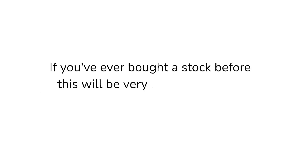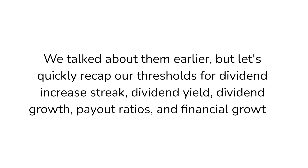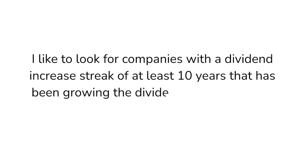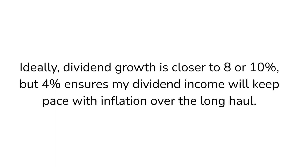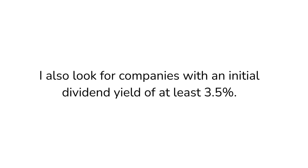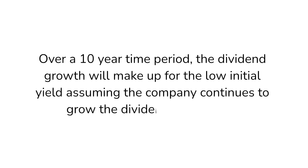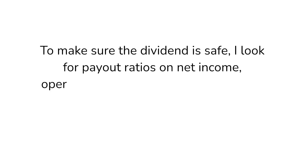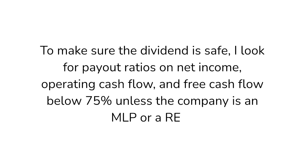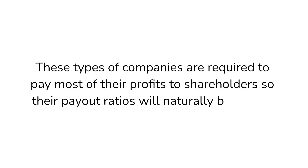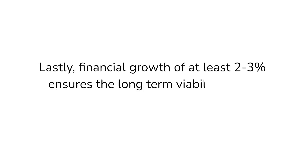Now let's talk about the mechanics of actually buying a dividend stock. Let's quickly recap our thresholds. I like to look for companies with a dividend increase streak of at least 10 years that has been growing the dividend at least 4% per year over that time frame. Ideally, the dividend growth is closer to 8 or 10%. I also look for companies with an initial dividend yield of at least 3.5%. If the dividend growth is really strong, I may drop this threshold down to 2%. To make sure the dividend is safe, I look for payout ratios on net income, operating cash flow, and free cash flow below 75%, unless the company is an MLP or a REIT, as these types of companies are required to pay most of their profits to shareholders. Lastly, financial growth of at least 2% or 3% ensures the long-term viability of the company and continued share price growth.